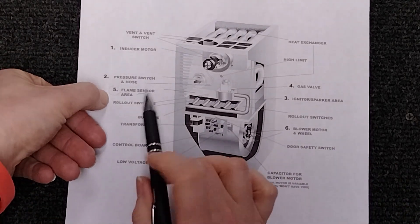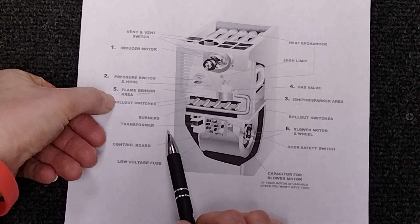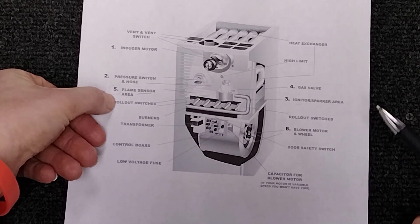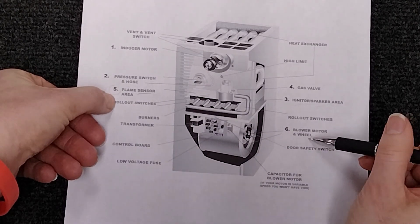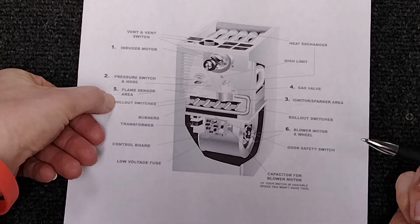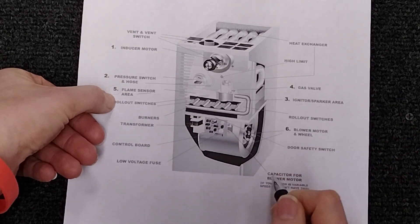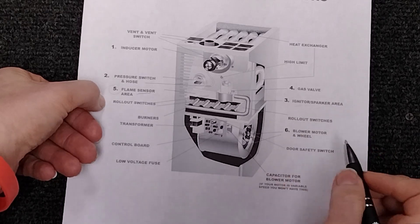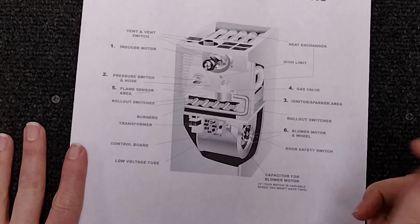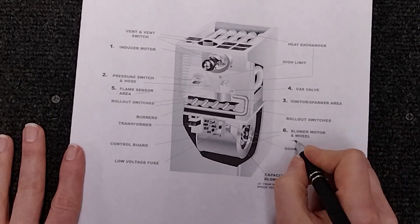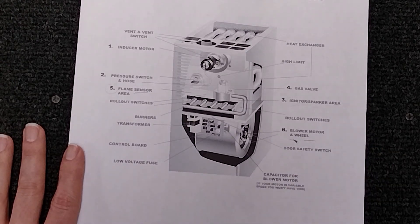So from there it's done all of these things before it signals the blower motor and blower wheel to come on. So once that blower motor comes on we've completed the stage of everything's good to go and now we're going to blow air into your home.